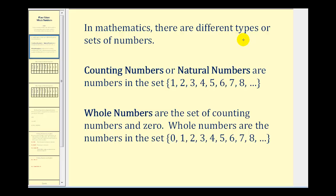In mathematics there are different types or sets of numbers. The counting numbers, sometimes called natural numbers, are the set of numbers as we see here — one, two, three, four, five, and so on — the numbers we use to count items.